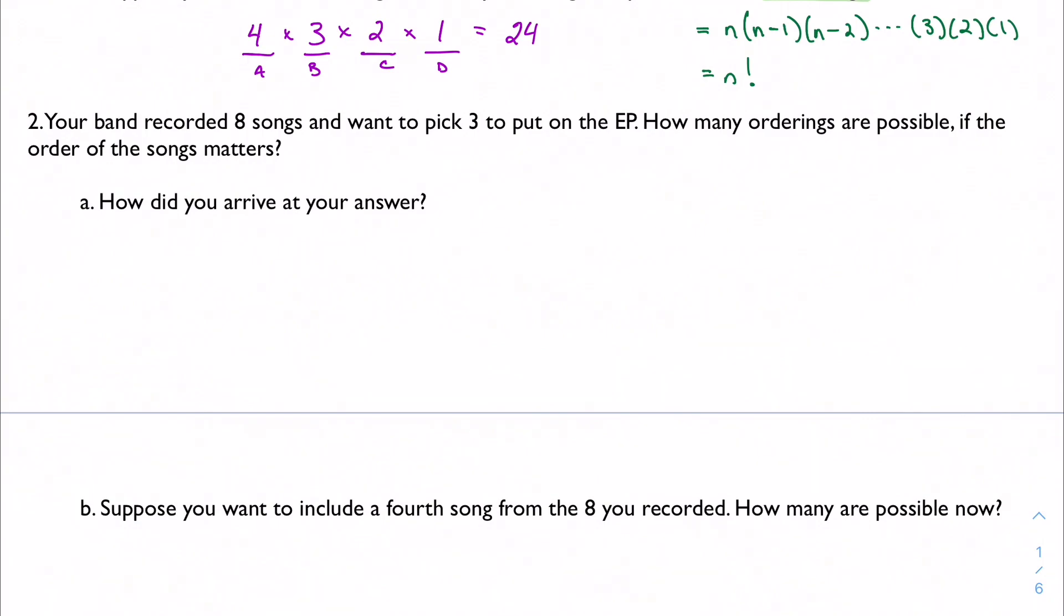So your band recorded eight songs, and you want to pick three to put on the EP. How many orderings are possible if the ordering matters? I've got three spots on the EP, call them A, B, and C. I have eight possible options. I have eight possible options for the first song, seven possible options for the second song, six possible options for the third song, and I get 336 possible ways I could order my songs. That's how I did it, I just followed my same logic.